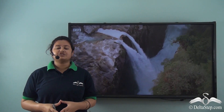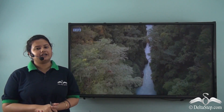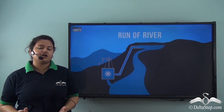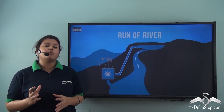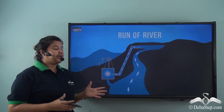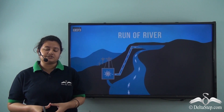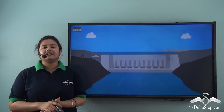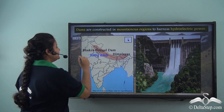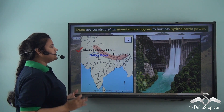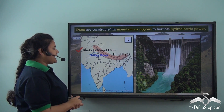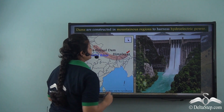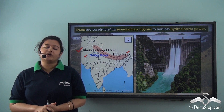The Himalayan range provides several sites that can be used for producing hydroelectricity. There are natural waterfalls in the Himalayan region where dams can be constructed. Dams obstruct the flow of a river and make a reservoir. Water released from the reservoir is used to rotate a turbine — this is how hydroelectricity is produced. Dams are therefore constructed in hilly regions to harness hydroelectricity. The Bhakra Nangal dam is the largest dam in India, located on the Sutlej river in the Himalayan region. Most dams are located in hilly regions.